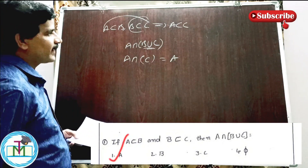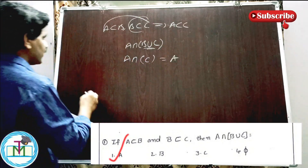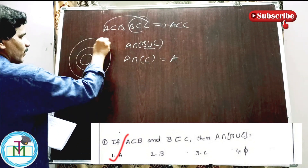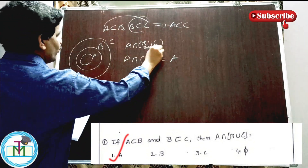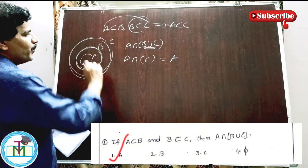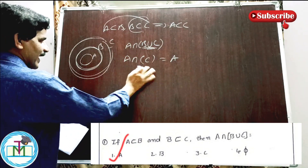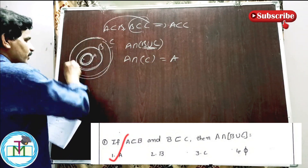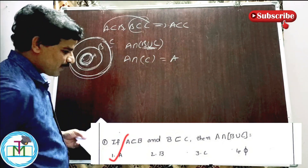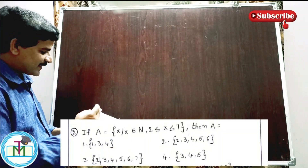A intersection C is equal to A. Therefore option one is the right answer. A is subset of B, B is subset of C, and A is subset of C. We have to cover B union C. B is subset of C, so A intersection (B union C) equals A. Option 1 is correct.